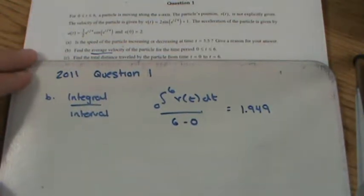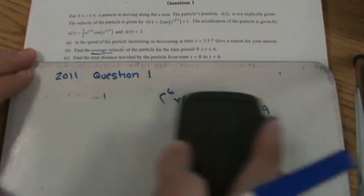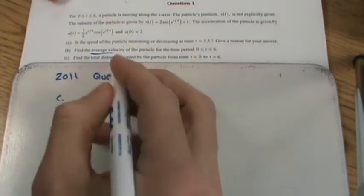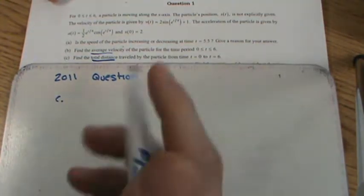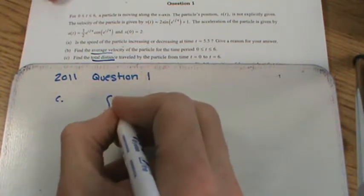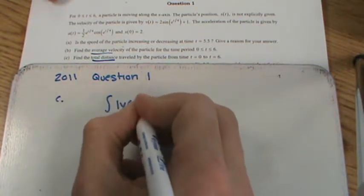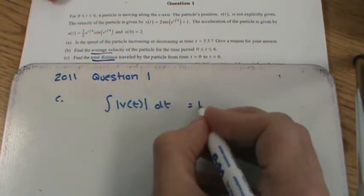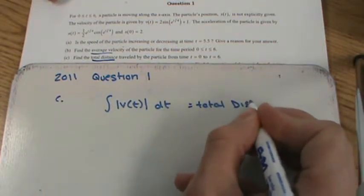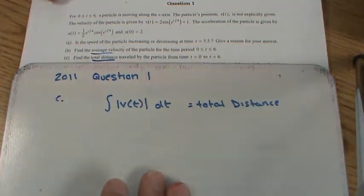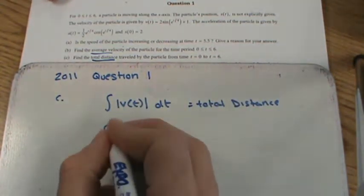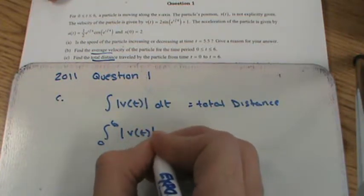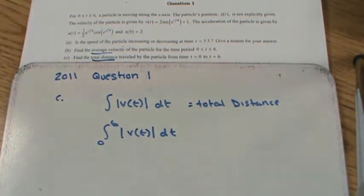Part C asks for total distance traveled — a very common particle motion question. Total distance is always the integral of the absolute value of velocity. So we need the integral from 0 to 6 of |v(t)| dt. Don't forget the limits and the dt.